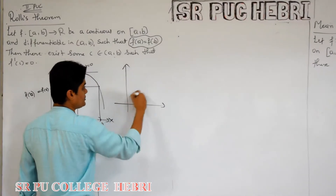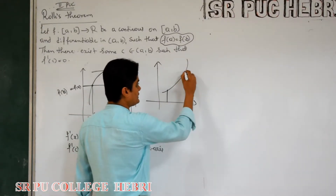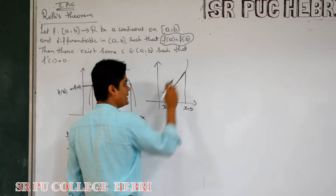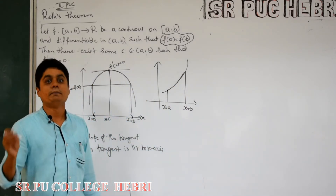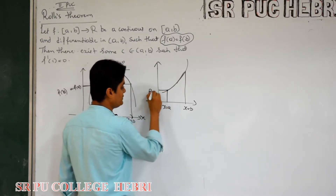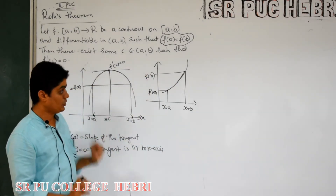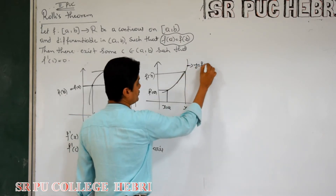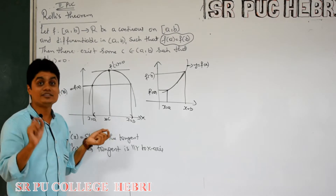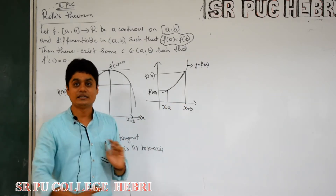Suppose the given curve is like this, and we take an interval a to b. The curve is smooth — continuous and differentiable in the interval. But the third condition fails: f(a) is here and f(b) is here, and they are definitely not equal. So for this type of curve, Rolle's theorem does not hold. Rolle's theorem holds only when all three conditions are satisfied, including f(a) = f(b).